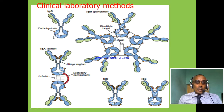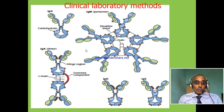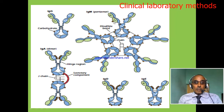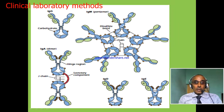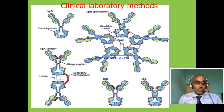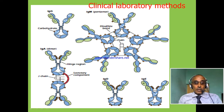Here we have the structures of the five classes of immunoglobulin. This is IgG — it is a single immunoglobulin monomer. This is IgM — it is the pentamer, five molecules of immunoglobulin. This is IgA — it is a dimer, or two molecules of antibody. This is IgD, and IgE.